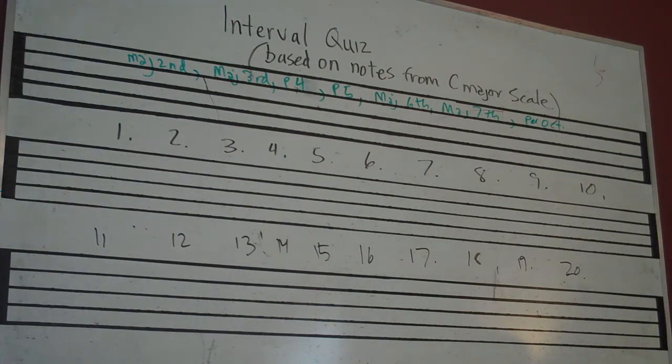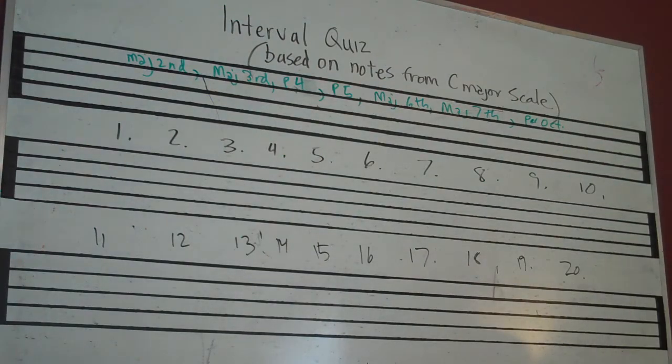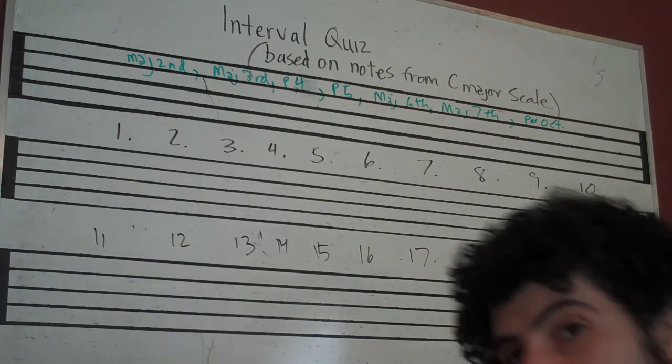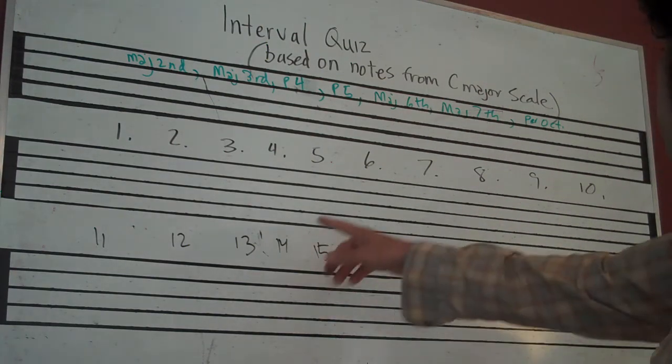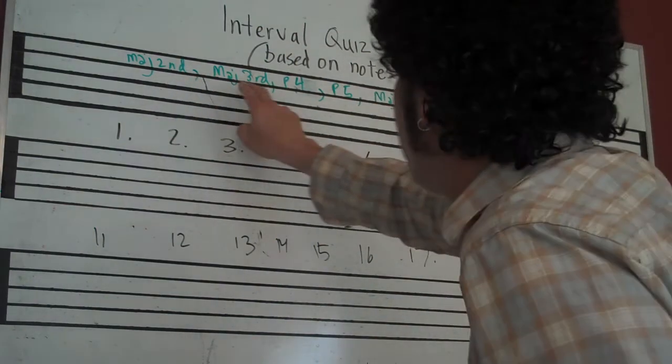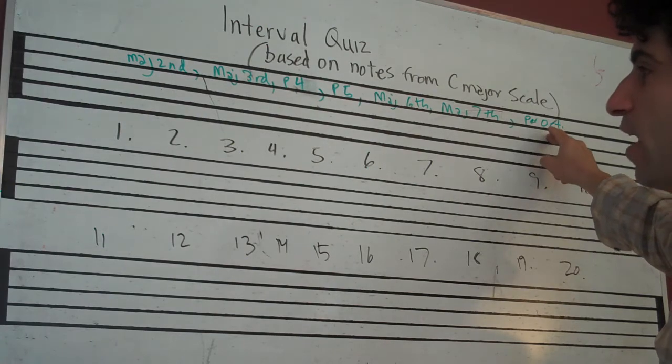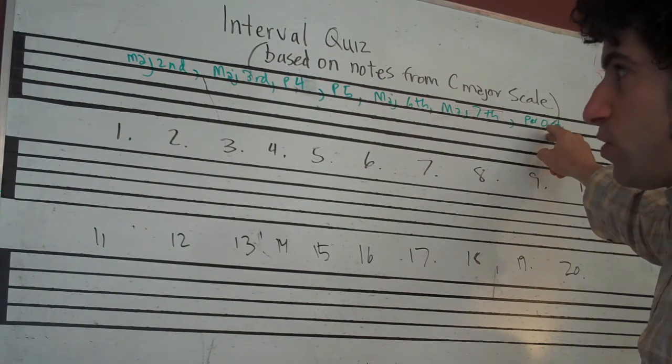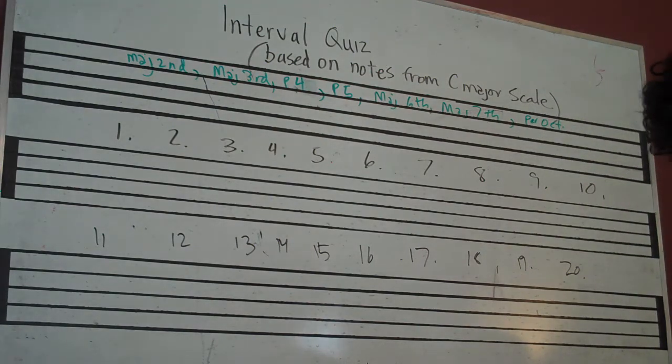Okay, so today we're doing a little ear training quiz. These are intervals based on notes from C major scale, or diatonic to C major scale. So you can number your sheet 1 to 20, and then these are the choices that you're going to have for each of the intervals. So I'll play an interval like, everything will be starting from C.